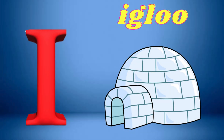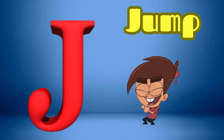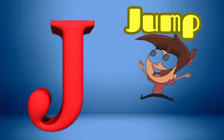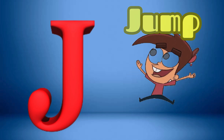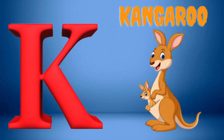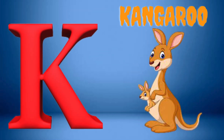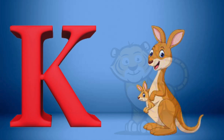I is for Igloo, I-I-Igloo. J is for Jump, J-J-Jump. K is for Kangaroo, K-K-Kangaroo.